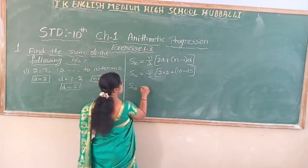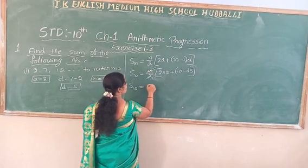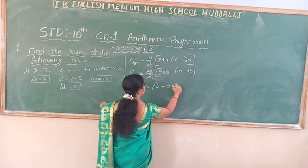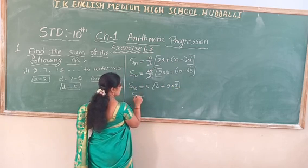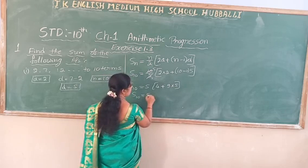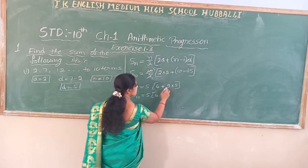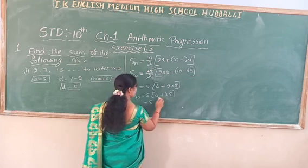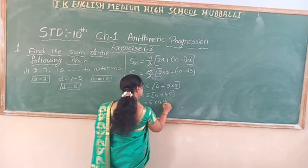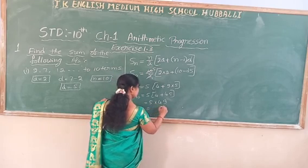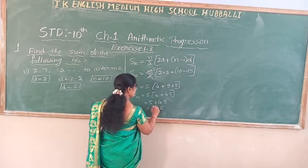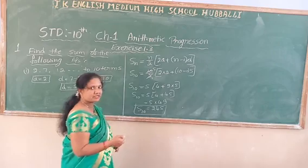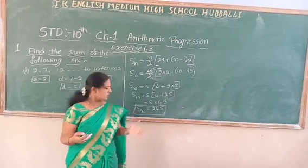Now simplify. Sum of 10 terms: 5 into 4 plus 9 into 5. That is 5 into 4 plus 45, which is 5 into 49, equals 245. So by using the formula Sn equals n by 2 into 2a plus n minus 1 into d, the sum of 10 terms of this AP is 245.